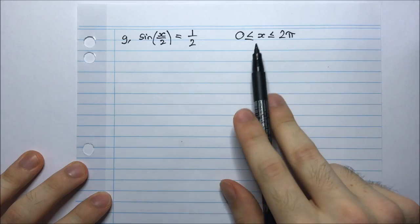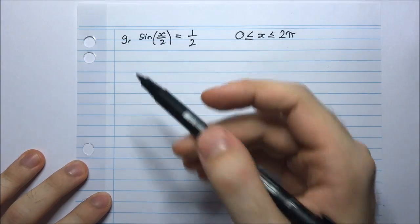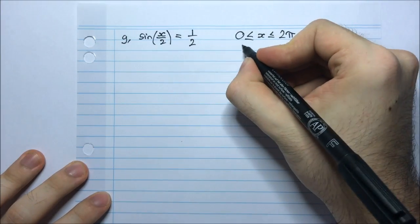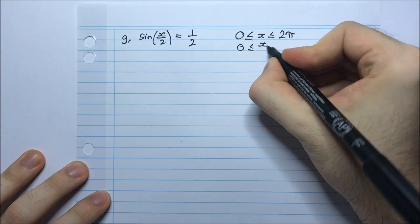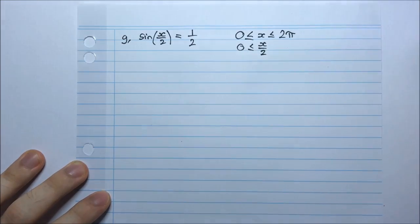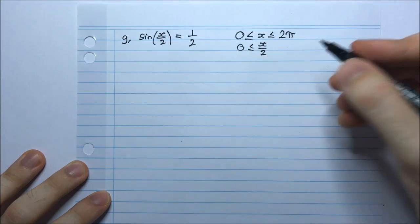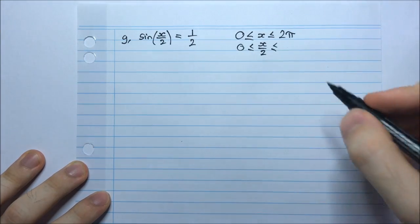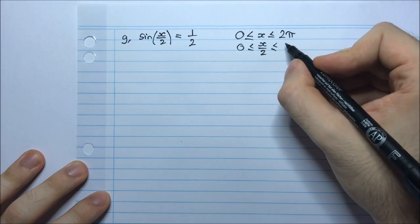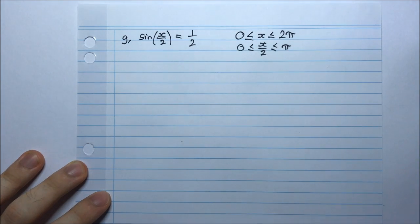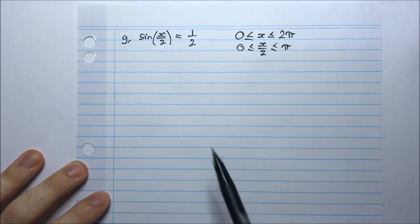Now my domain is for x, but I'm dealing with x/2. So it's a good idea to write my domain in terms of x/2. So if I divide everything by 2, of course dividing 0 by 2 remains 0. x by 2 gives me x/2. And 2π divided by 2 gives me just π.